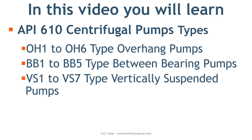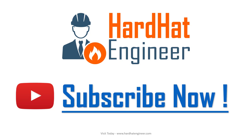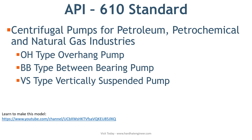Watch the video to get a complete understanding of these topics. API 610 is the standard for centrifugal pumps for petroleum, petrochemical, and natural gas industries.